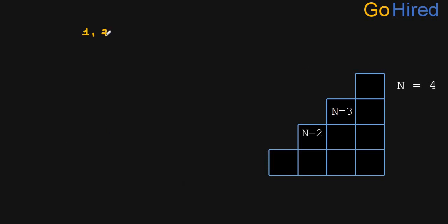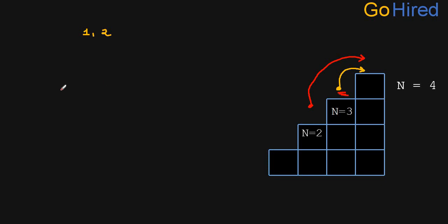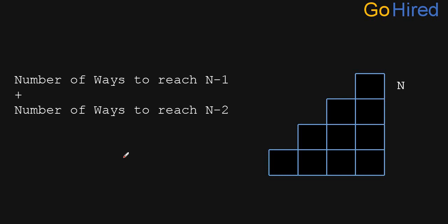For n equals 4, as you can take only jumps of 1 or 2, you can come from 3 or from 2. To reach to 3, there is a sub-problem we already discussed, and to reach to 2, there is another sub-problem. So the total number of ways to reach to 4 is the total ways to reach to 3 plus total ways to reach to 2.